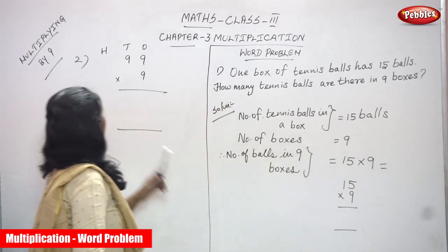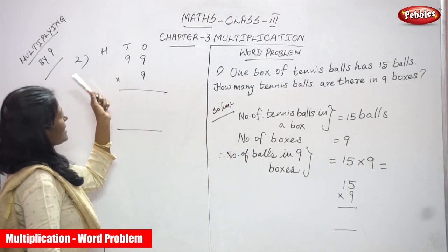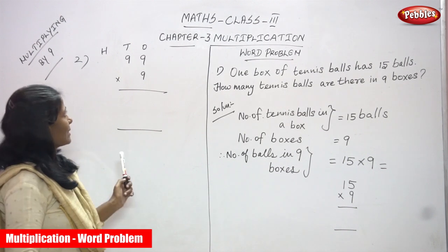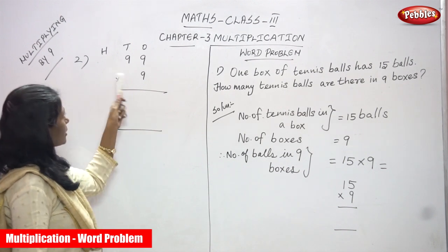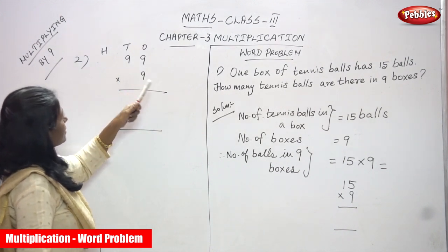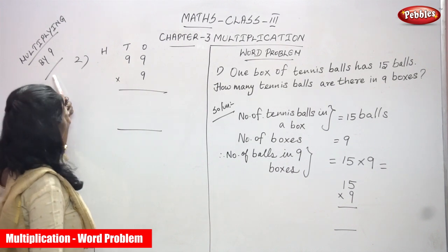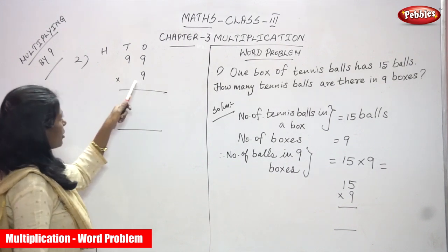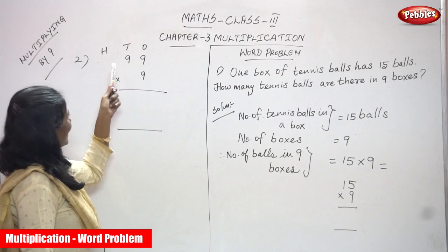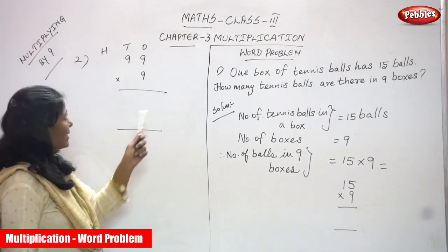I am going to repeat the sum again because I made a small mistake and I want to correct it. So, this is 99 multiplied by 9. We are going to use the multiplication table of 9. 99 is going to be multiplied by 9.